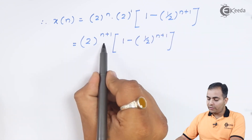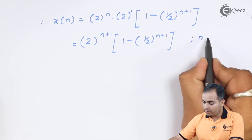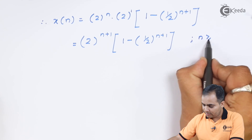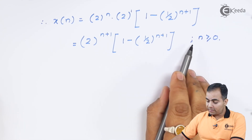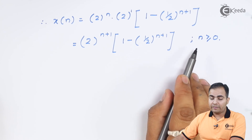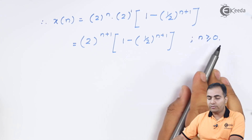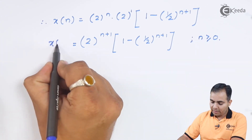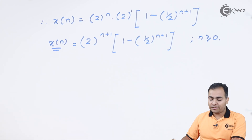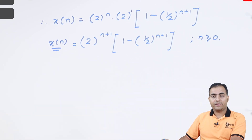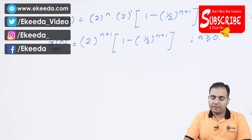We can multiply by u(n), or equivalently state the condition that n ≥ 0, because the summation had k varying from 0 to n. This is the final answer for the convolution using inverse Z-transform. We will solve a similar numerical in the next video — stay tuned to Ekeeda and subscribe for more videos. Thank you.